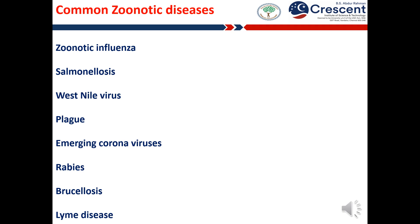The recent emergence of novel coronavirus COVID-19 is causing an outbreak of unusual viral pneumonia all around the world. Rabies is a viral disease that causes inflammation of the brain in humans and other mammalian species. Early symptoms can include fever and tingling at the site of exposure. Brucellosis is a highly contagious zoonosis caused by ingestion of unpasteurized milk or undercooked meat from infected animals, or by close contact with their secretions. Lyme disease is caused by the bacterium Borrelia and is transmitted to humans through the bite of infected black-legged ticks.